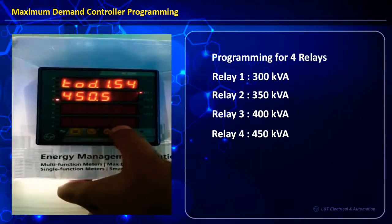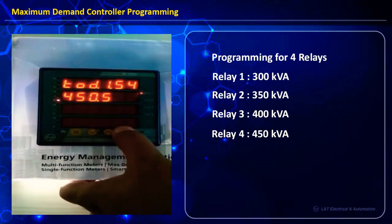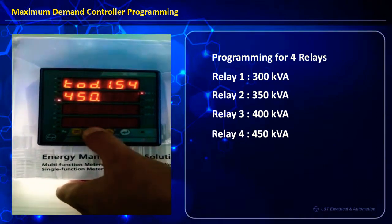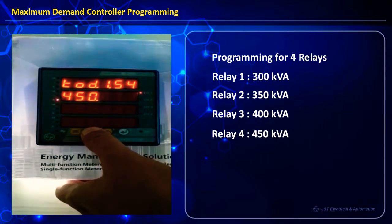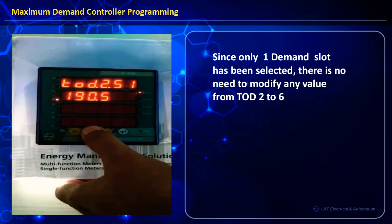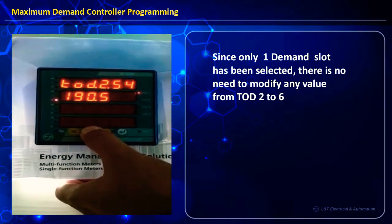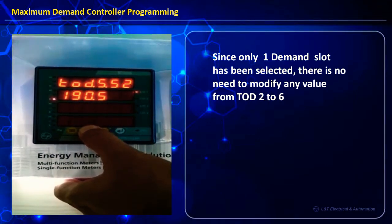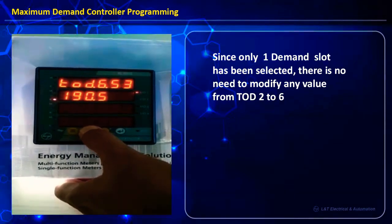Depending upon whatever threshold value is kept in these relays, the moment running demand crosses this value, the corresponding relay gets activated. Since we have programmed only for TOD1 — that is, from 00:00 to 23:59 — the remaining TOD slots can be kept as they are.